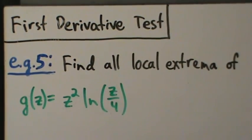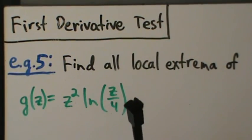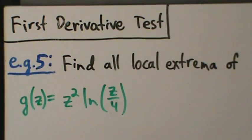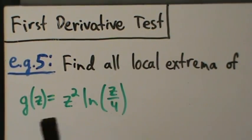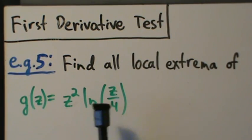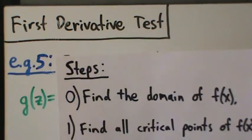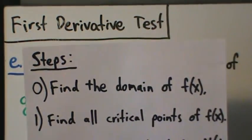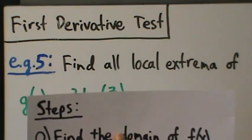This is example 5 with the first derivative test. We're going to use the first derivative test to find all the local extrema of the function g of z equals z squared times natural log of z over 4. Step 0 is to find the domain of the function — in this case g of z. So we want to find the domain first.